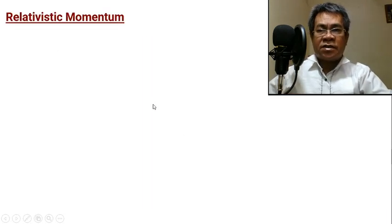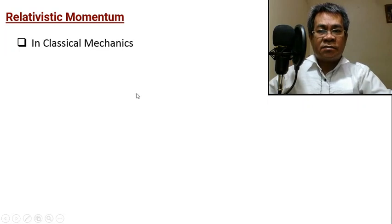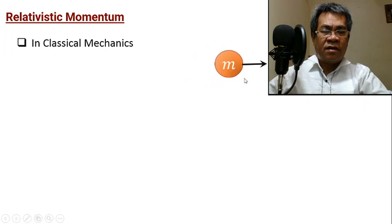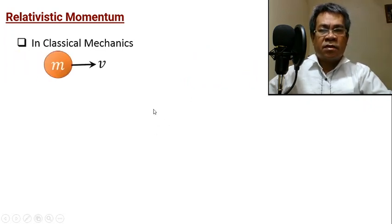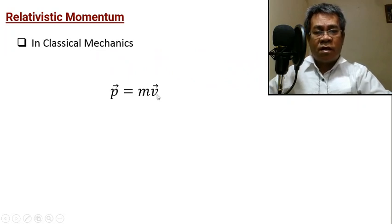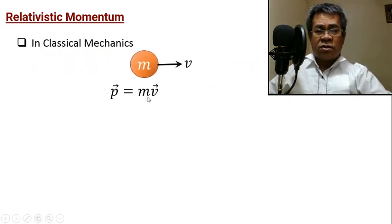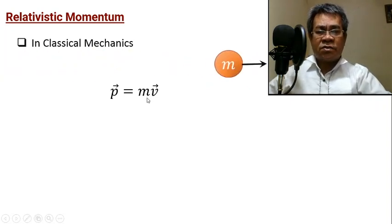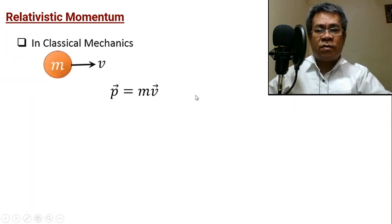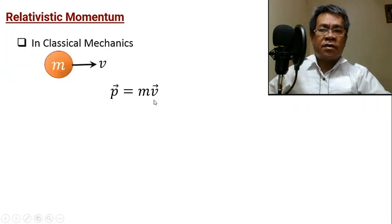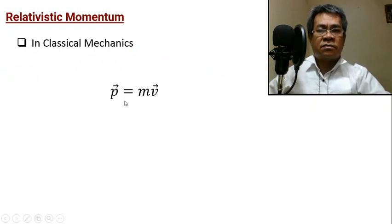Let us recall first for classical mechanics. If we have a particle whose mass is M traveling with velocity V, then the product of mass and velocity is the momentum. Momentum is directly proportional to velocity — the greater the mass or the greater the velocity, the greater the momentum. Since velocity is a vector quantity, momentum must also be a vector.